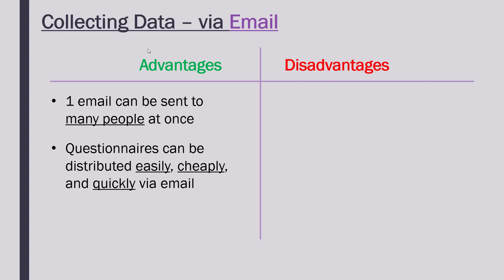An email can go to thousands and thousands of people if they're on an email list. From the perspective of collecting data, it's very easy to send an email to loads of people. It's cheap — you don't have to pay per email — and it's quick. If you're printing out questionnaires and sending hard copies, you might have to post them which takes at least a day, but an email is sent and received pretty much straight away.